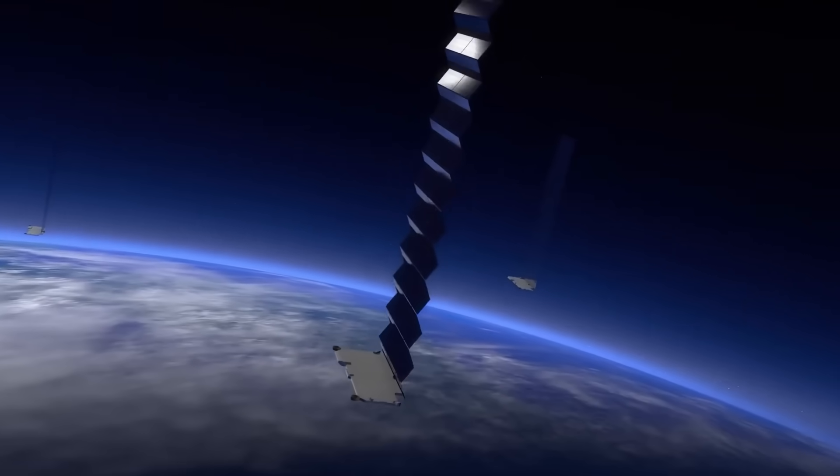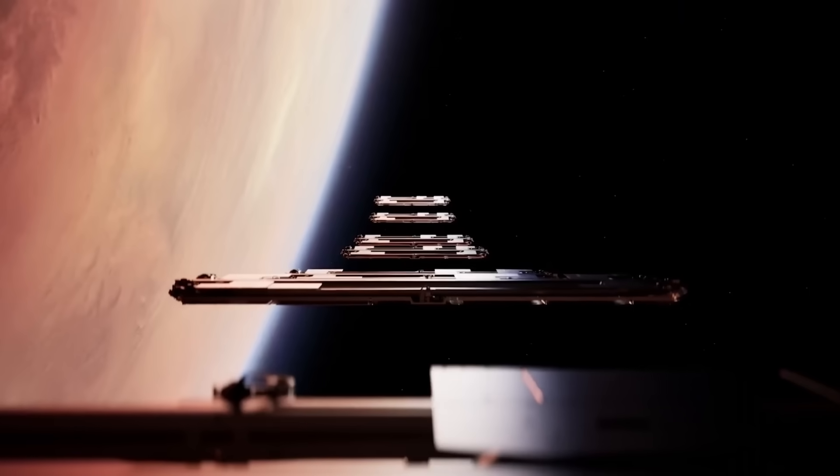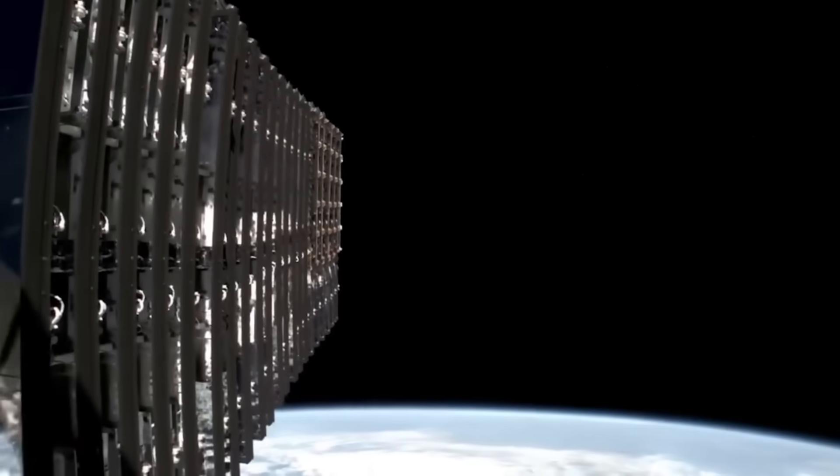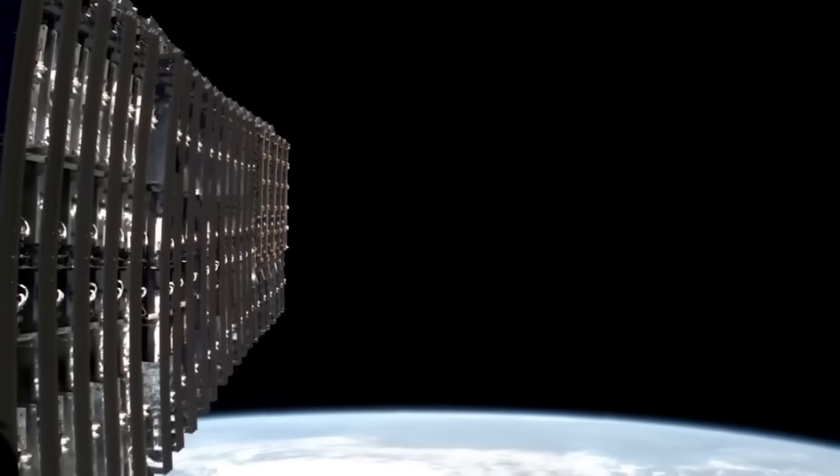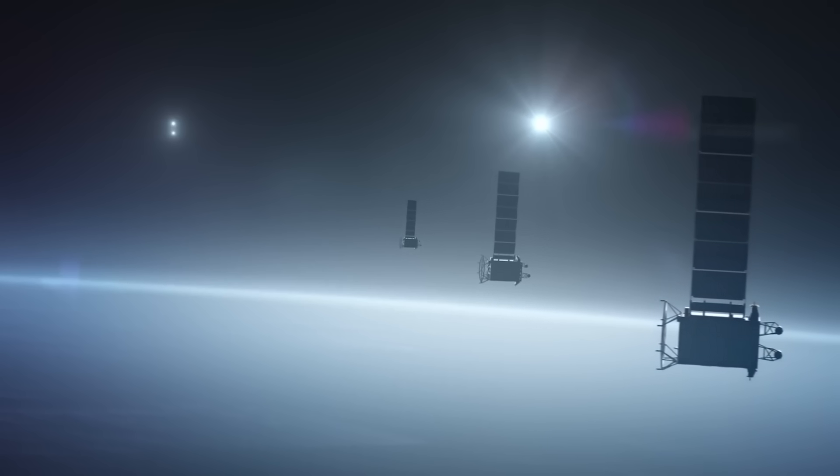Second, the satellites are designed to avoid collisions. Each one has an artificial intelligence system that helps it move away if there is a chance it might crash into another object. SpaceX also shares the position of its satellites with space agencies like NASA and the European Space Agency. This helps all groups plan and avoid accidents.